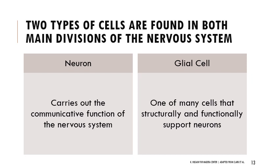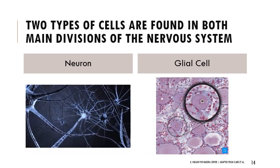Neurons are responsible for the communicative function - sending electrochemical signals between different parts of the nervous system. Glial cells are support cells that structurally and functionally support neurons. When you look at neurons you can see the cell body, the axon, and dendrites making connections. Glial cells look very different, so we'll review those individually and talk about their structure and function.